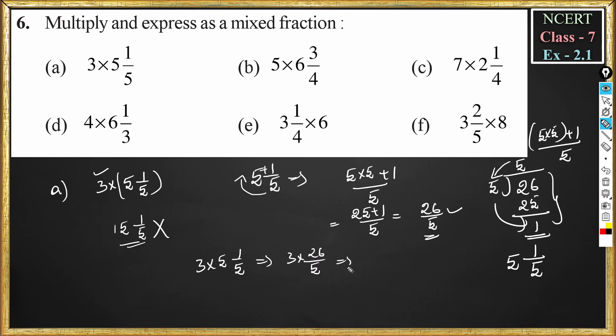3 into 26/5: 26 multiplied by 3 is 78, divided by 5. So this is an improper fraction and we should convert it to a mixed fraction.